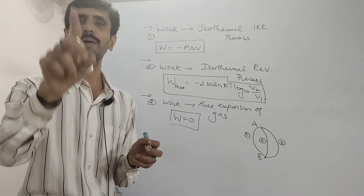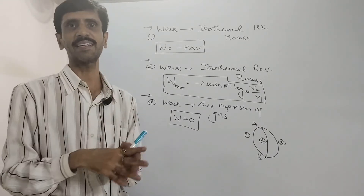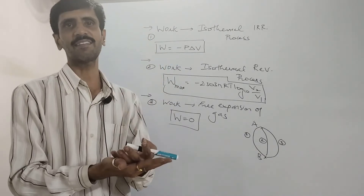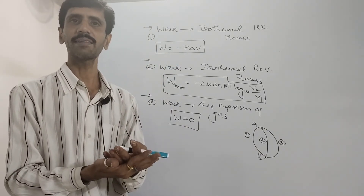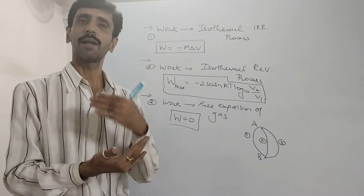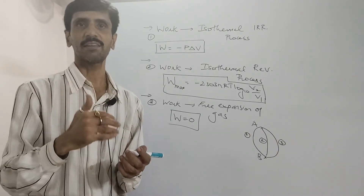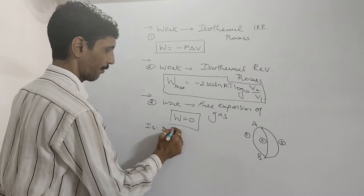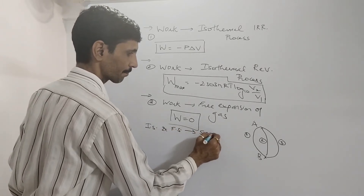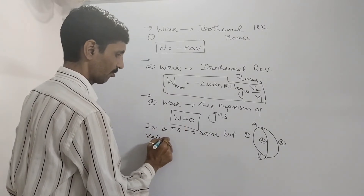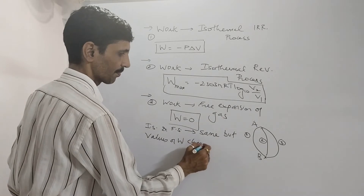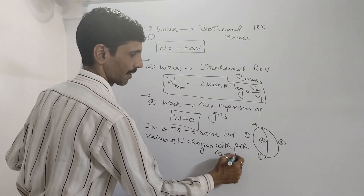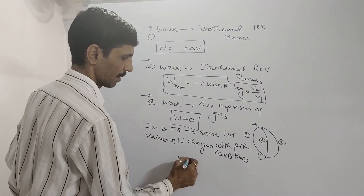This means the value of work depends upon the conditions — it depends upon the path followed, and it does not depend upon the initial state and the final state. The values of work depend upon the path and therefore work is a path function.